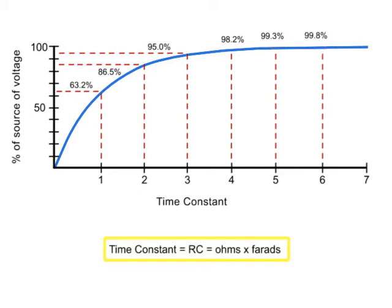A time constant in seconds is equal to the resistance of the circuit in ohms multiplied by the value of the capacitance in farads.